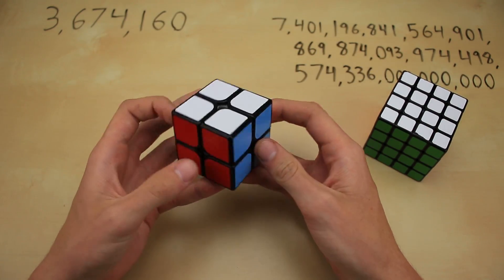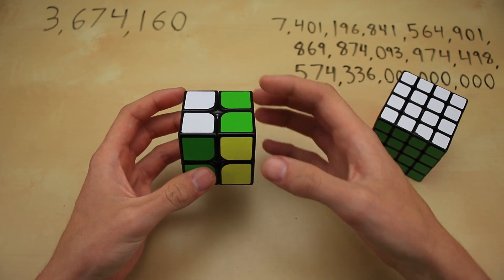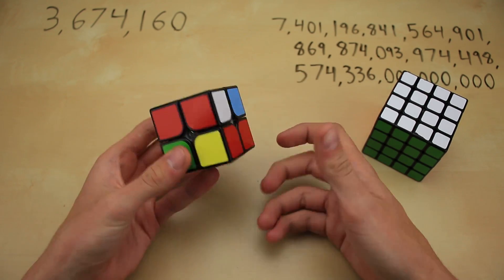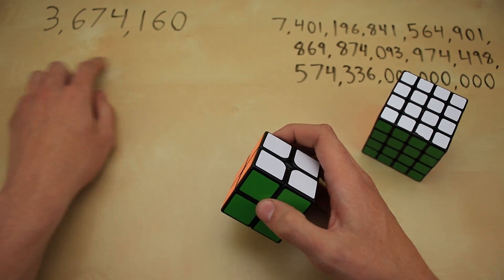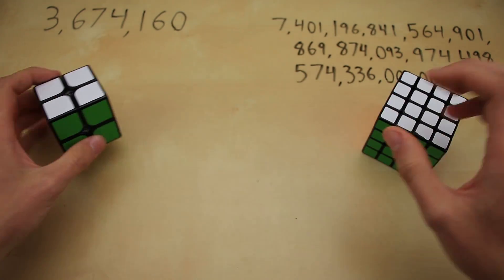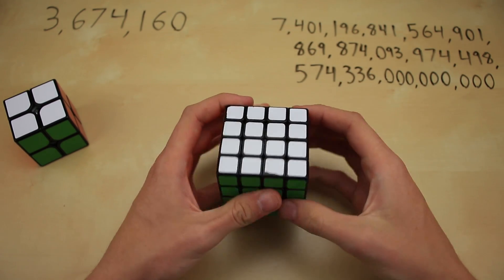Starting at a solved state, this is one position, this is another position, this is another one, and you can count all those positions and get up to 3 million for this cube, and this huge number for this cube.